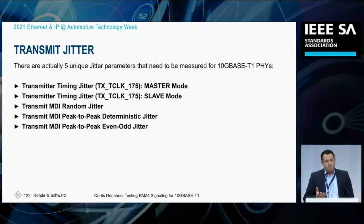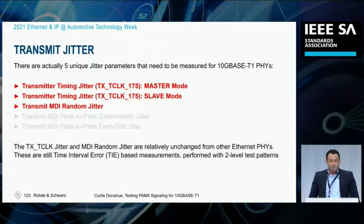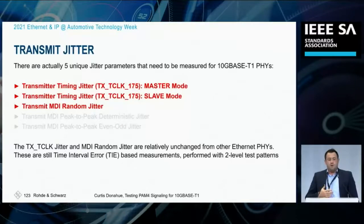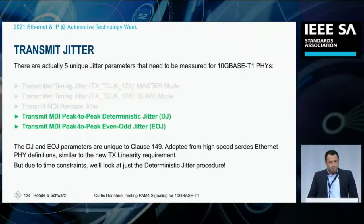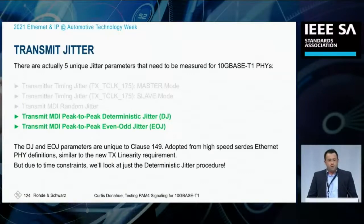When looking at the jitter parameters for 10GBase T1, there are actually five unique test cases looking at different types of jitter and different modes of the transmitter. Due to timing constraints, I'm going to focus on only one: deterministic jitter. Master mode, slave mode, and random jitter are relatively unchanged compared to 100Base T1 and 1000Base T1 — these are all still time interval error (TIE) based measurements done on two voltage level test patterns. Deterministic jitter and even-odd jitter are unique to 10GBase T1; they've been adopted from other IEEE clauses that also used PAM4 encoding, but not seen in earlier automotive Ethernet implementations. Deterministic jitter is what I'm focusing on in the next couple of slides.